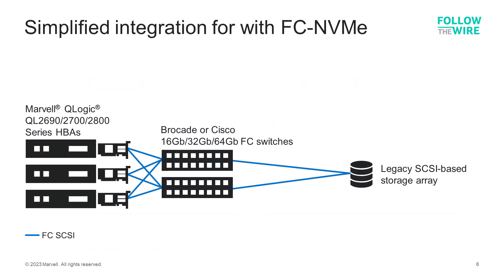Another big advantage of fiber channel when it comes to NVMe over fabric is the simplified integration of new NVMe technology with older SCSI-based technology. Typically customers have an existing SCSI-based environment and legacy storage arrays already in production, and they simply want to add more storage — thinking about adding new, fast, native NVMe storage arrays to that environment. The good news is that adding NVMe storage to an existing fiber channel SAN is relatively seamless.